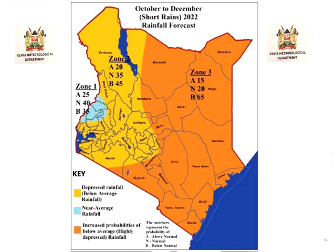The areas with increased probabilities for below-average — or highly depressed — rainfall are the northeastern counties of Mandera, Marsabit, Wajir, Garissa, and Isiolo. The coastal region — Mombasa, Tana River, Kilifi, Lamu, and Kwale — and parts of southeastern Kenya: Kitui, Makueni, parts of Machakos, Taita Taveta, and Kajiado also fall in this category.